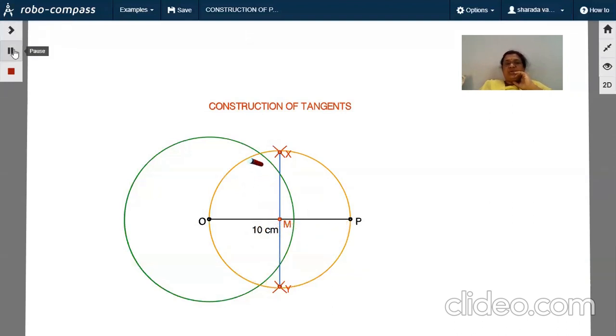The circle will intersect the previous circle at Q and R. You have to join PQ and PR. These two will be the pair of tangents to the circle.